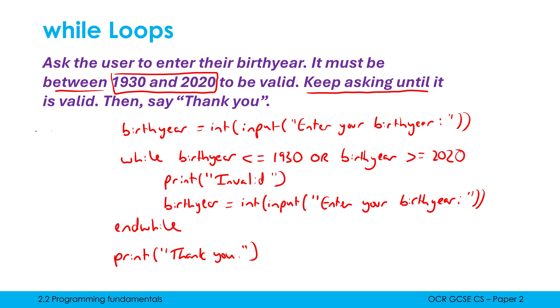However, let's say I get it wrong and I type in initially 1875. I'm very old. Well, the while loop condition is true because this left hand side is true and OR only needs one side to be true for the whole thing to be true. So if we print invalid, we therefore ask the user to enter their birth year again. Let's say I type in this time 1945. Well, it goes back round to check my condition. And now neither of these sides is true. 1945 isn't less than equal to 1930 or greater than or equal to 2020. Therefore, this while loop condition is false. Therefore, it skips the rest of this while loop and goes back down to the last line where it says thank you.